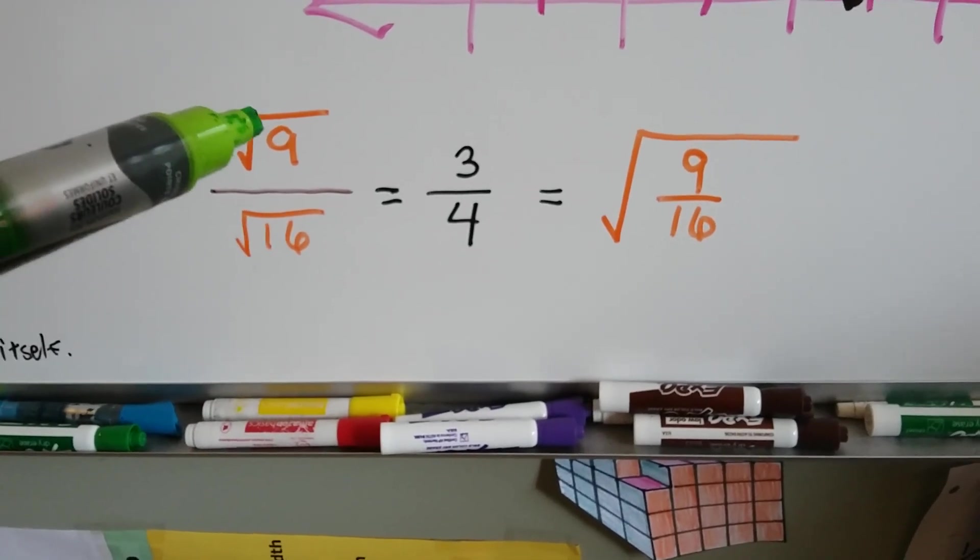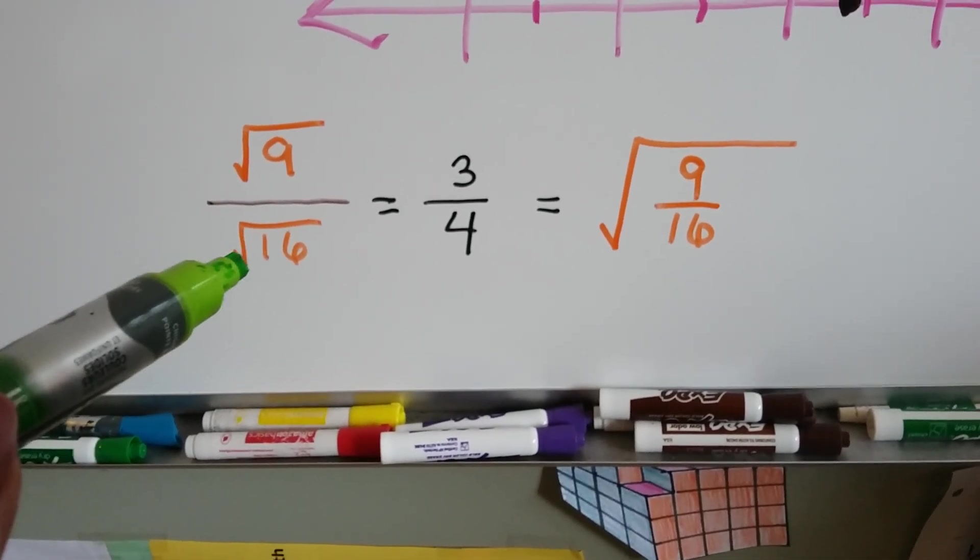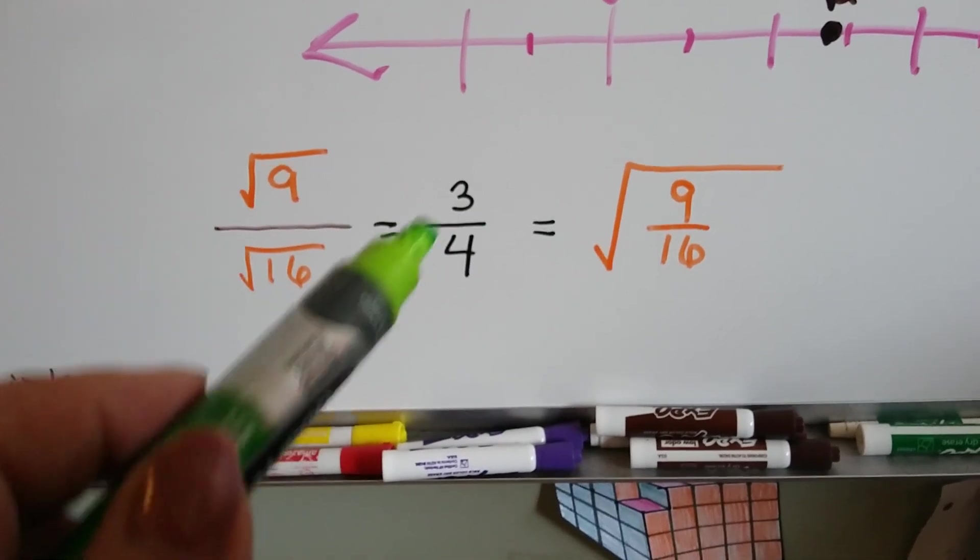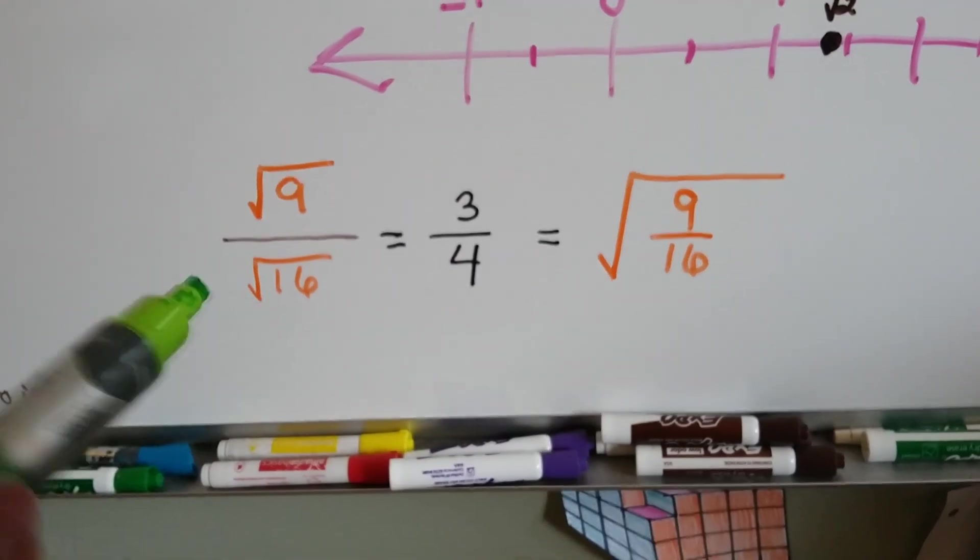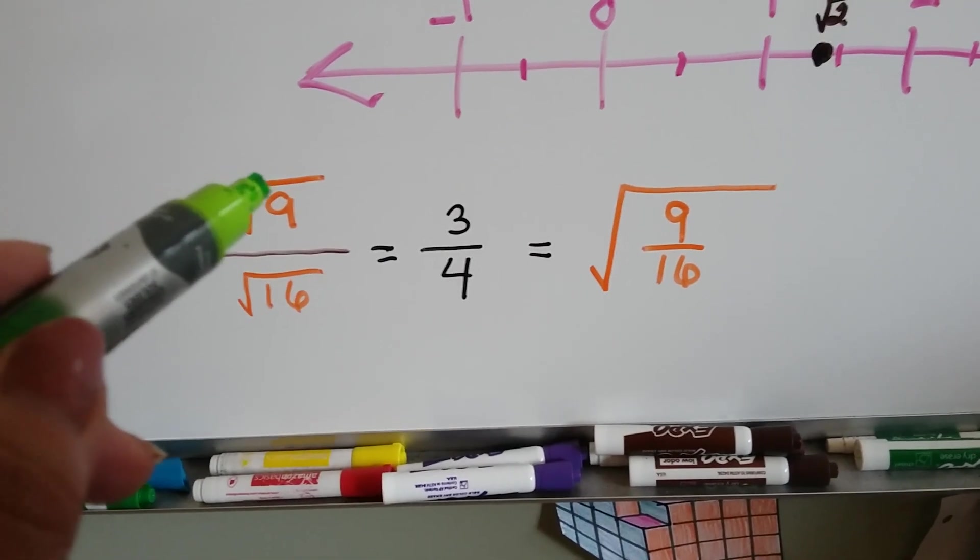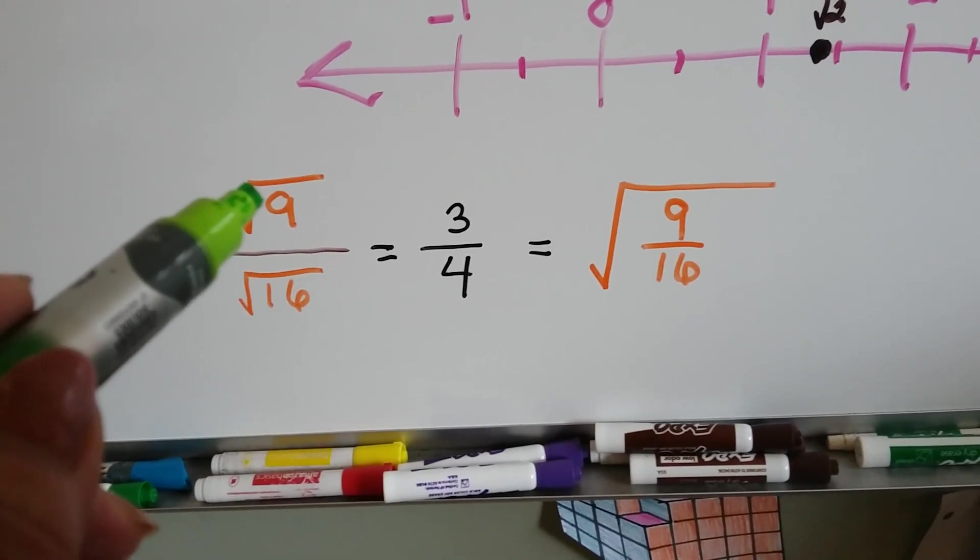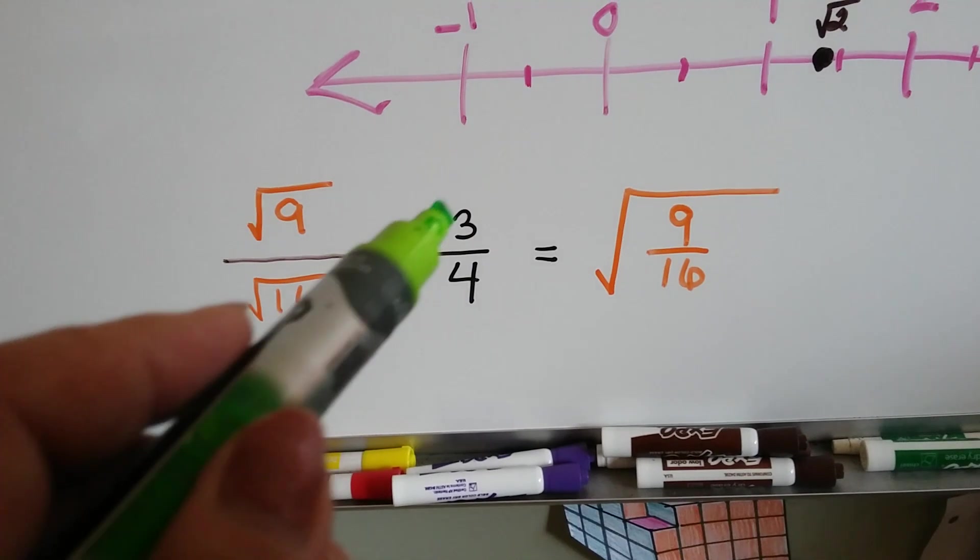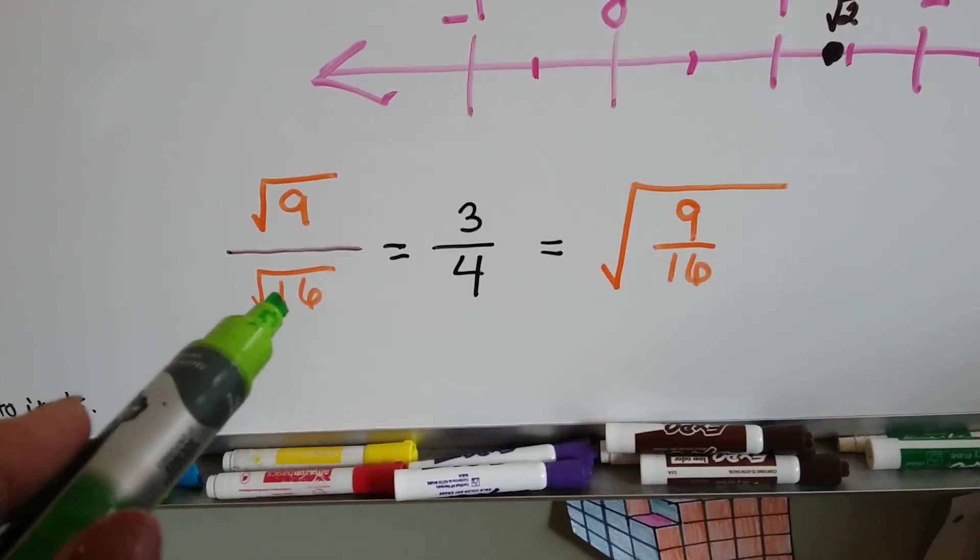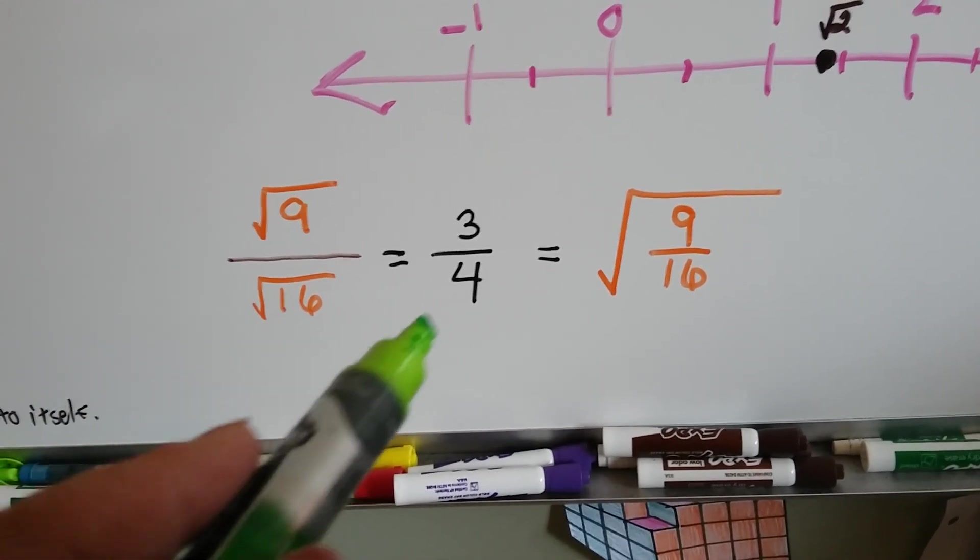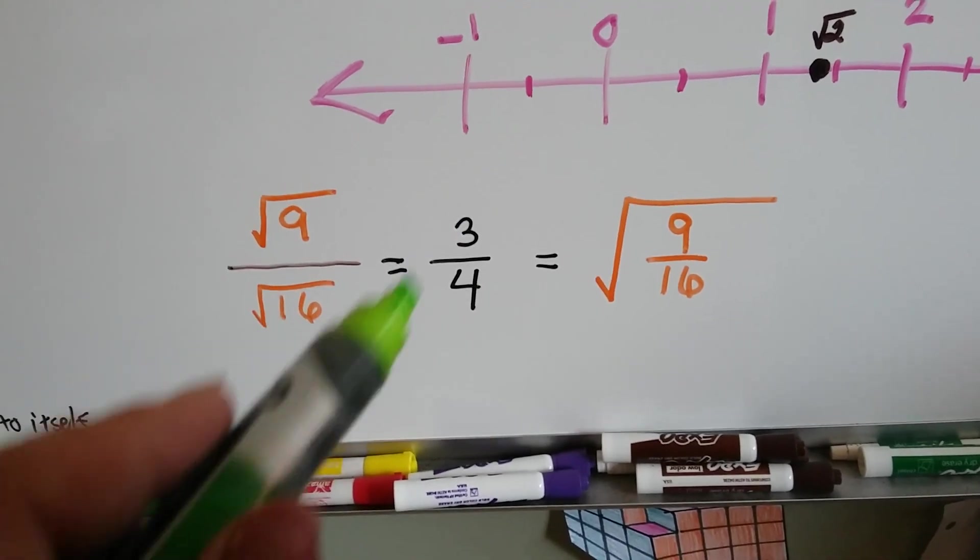Now if you ever see the square root symbol on the top as the numerator and on the denominator, it's the same thing as if it were over the whole thing. When you see this radical symbol on the numerator and the radical symbol on the denominator, just get the square root of 9, which is 3 times 3, so it's a 3, and 16, the square root of 16 would be 4 because 4 times 4, so it would be 3 fourths.